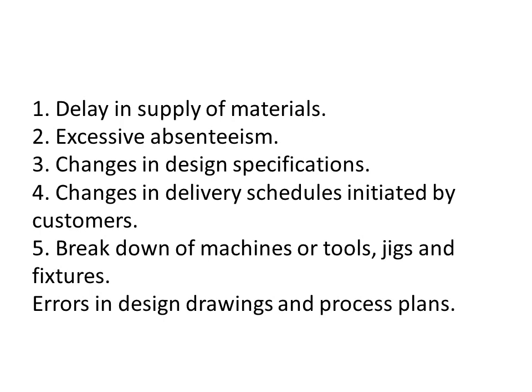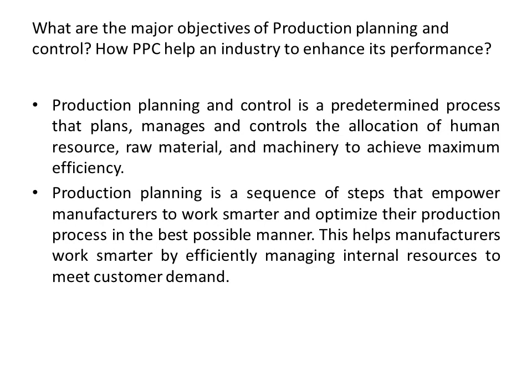What are the major objectives of production planning and control? How does production planning control help industry to enhance its performance? Production planning and control is a predetermined process that plans, manages, and controls the allocation of human resources, raw materials, and machinery to achieve maximum efficiency.